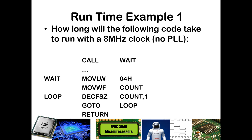Let's see an example. If we have a call to a subroutine 'wait' and then see the subroutine below, how much total time would elapse? The call itself will be executed one time, and that is a two cycle command. Once we get into the subroutine, it's going to load 4 into W, move that into count, and then enter a loop where it decrements count. The label doesn't take any time, and the first two commands loading the counter are each one cycle commands.